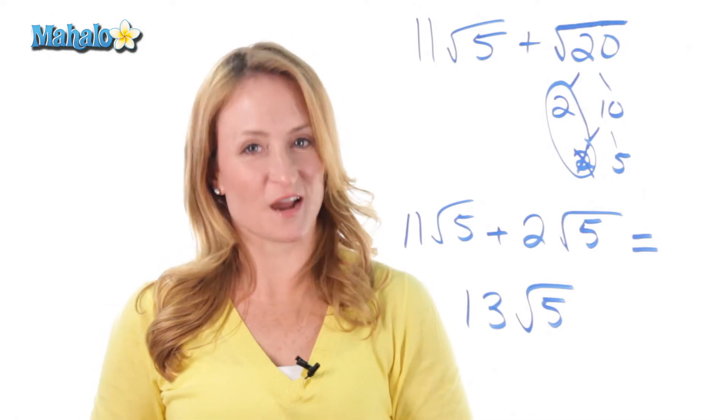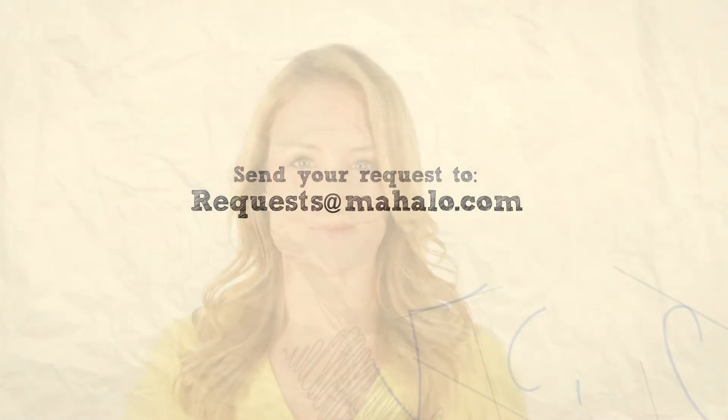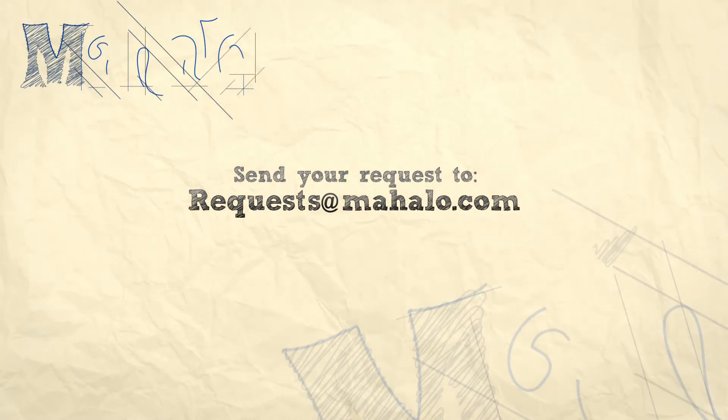So it's thirteen root five. And that's how you add radicals. Thanks for learning with me today. If you liked what you saw and would like more information about related topics, click on the links below. And if you have specific problems or requests, email them to requests at mahalo.com. See you next time.